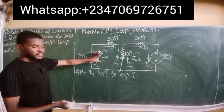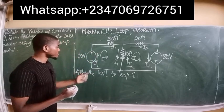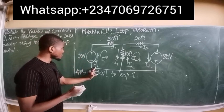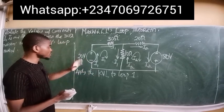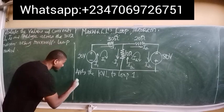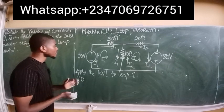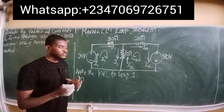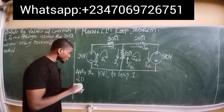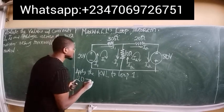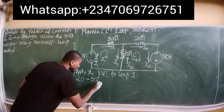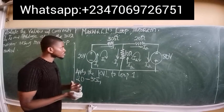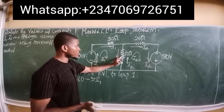Loop 1 is the very first loop. Since current I1 is moving from negative to positive terminal through the voltage source, there is always a potential gain, so 20 volts is positive. This same current I1 is flowing through the 30 ohm resistor, and whenever a current flows through a resistor there is always a potential drop, so we have minus 30 times I1.